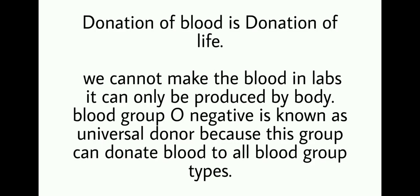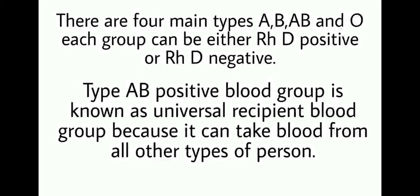Blood group O negative is known as the universal donor because this group can donate blood to all blood group types. There are four main types of blood groups: A, B, AB, and O. Each group can be either RhD positive or RhD negative.